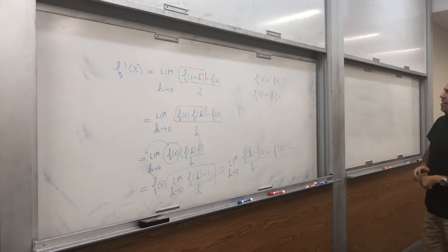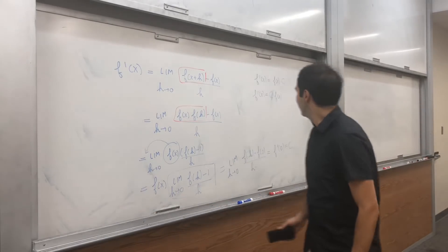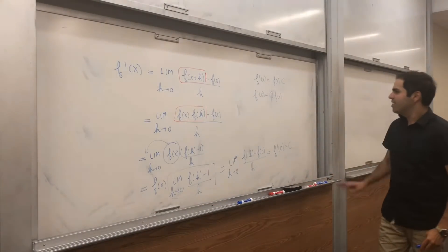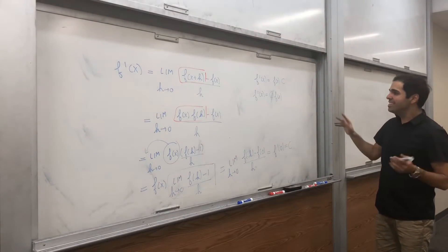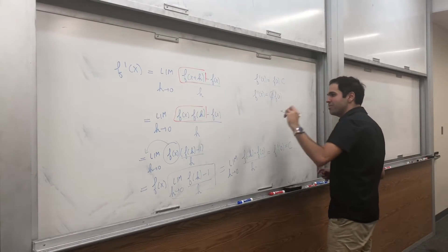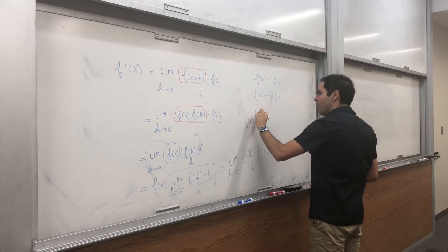f prime of x equals to c f of x. And let me see. Then I guess one fact you need to know, man, I should have said c equals to 1. For example, assuming things are positive, take f of x to the 1 over c.